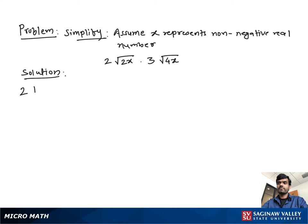Simplify 2 times square root 2x times 3 times square root 4x. First we multiply 2 and 3 outside of the radicals, then we multiply radicands under the radical.